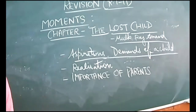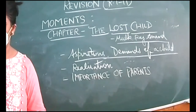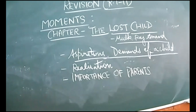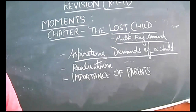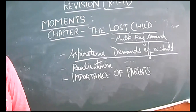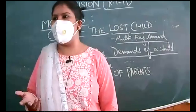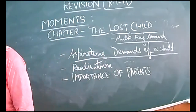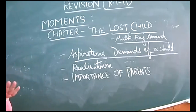Let's move towards the short summary. Note down the main points. The story is about a small child who is going to a fair — F-A-I-R — with his parents. The child is being taken to the fair by his parents; he is not going by himself. Fair means a mela. There are many attractions in the fair.